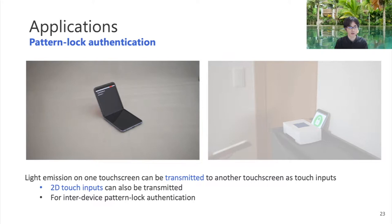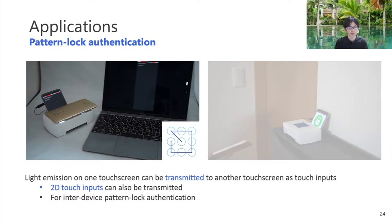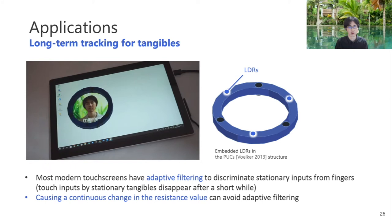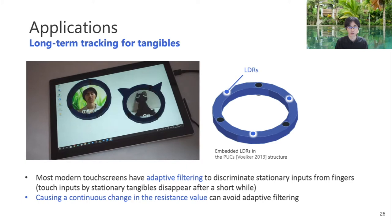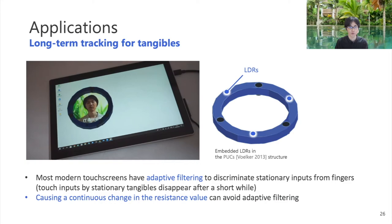Here is another variation of the inter-device applications. The gadget has LDRs arranged in a grid layout. By simply holding the screen over the gadget, it simulates the finger movements of a two-dimensional plane. This can be used for pattern-based authentication in room security systems. Some concepts also involve tangible applications — the continuous change in resistance value allows the gadget to be detected for long periods of time, and when the user places the gadget on the touch screen, the corresponding application appears.